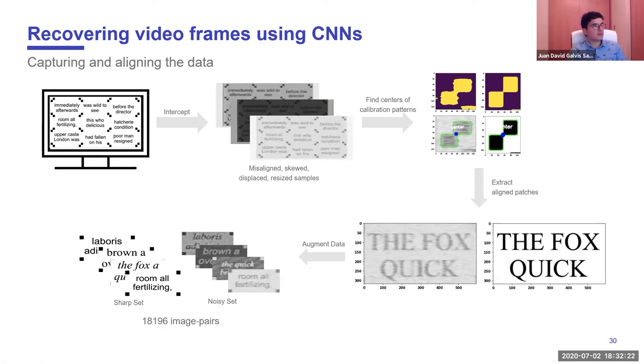It allowed to increase a lot the performance of these type of models in image classification tasks. Since then convolutional neural networks have taken over the field of computer vision basically. Okay, so now after discussing these topics, we go back to what we actually do to remove the noise out of these images, which is what we care about. The process we follow is we first capture the data. For this, what we do is we have these images, these base images that are displayed in a monitor, and they have these calibration patterns.